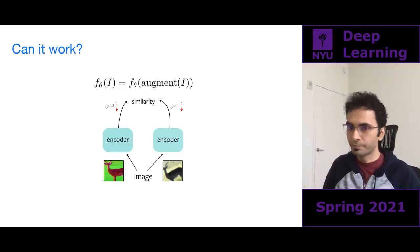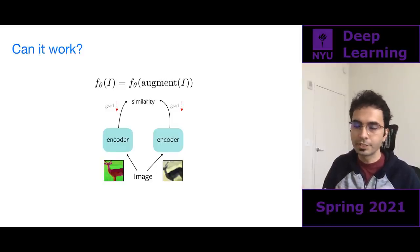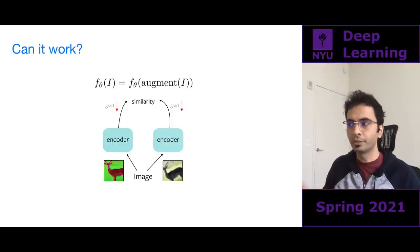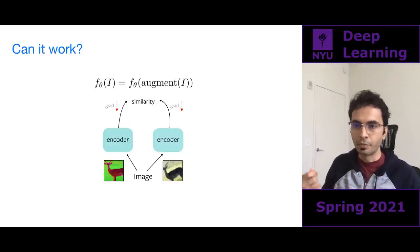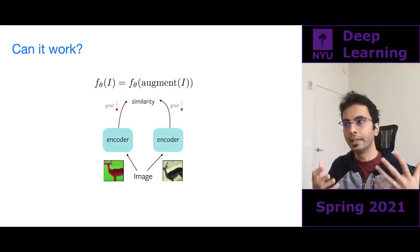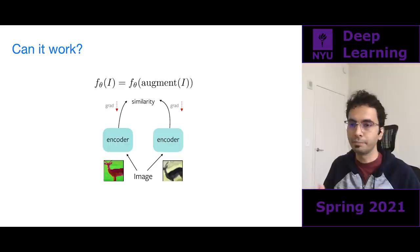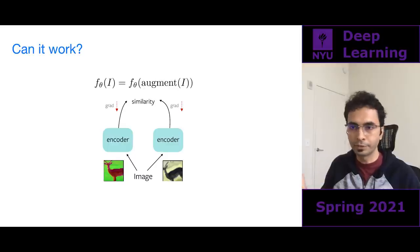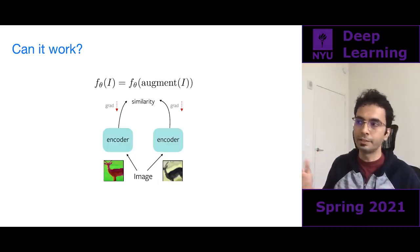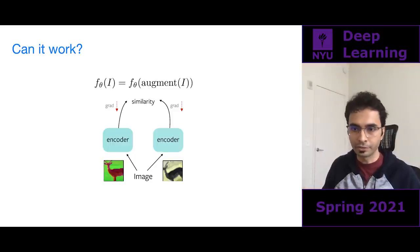Let's see if such an approach can work. Going back to Siamese networks: take an image, apply two different data augmentations, feed it to an encoder — a Siamese network — get features for both augmentations, and try to maximize similarity. We're trying to say f_theta(i) should be very similar to f_theta(augmented i). The similarity can be cosine similarity or L2 distance — you get gradients and back-propagate to update your encoder. If this is so simple, why is research needed?